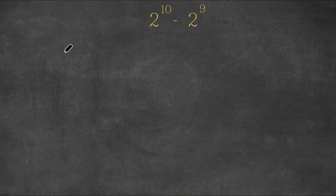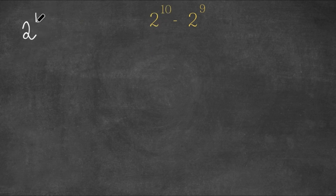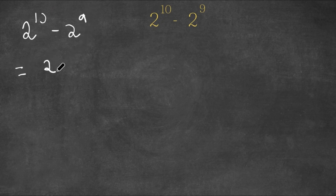What I'm first going to do is rewrite this 10 as 9 plus 1. So we have 2 to the power of 10 minus 2 to the power of 9, and this is equal to 2 to the power of 9 plus 1 minus 2 to the power of 9.